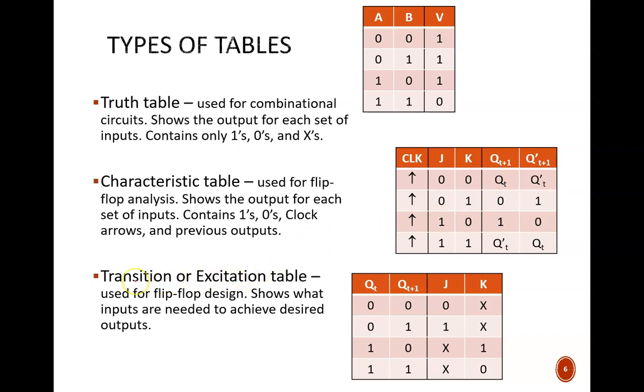Transition tables are what we just introduced this video. They are also commonly called excitation tables. These are used for flip-flop design, and so swap the sections of a characteristic table. On the left, we see the output behavior. On the right, we see what instructions will cause that behavior.